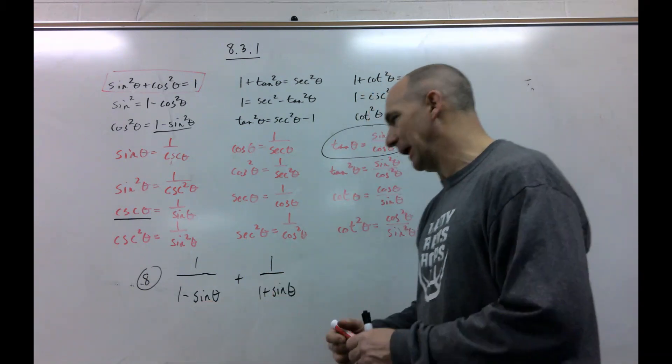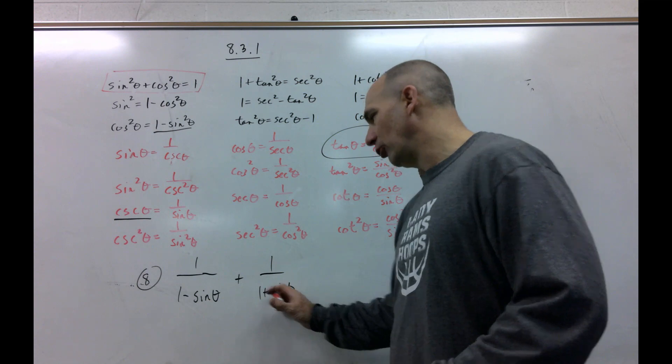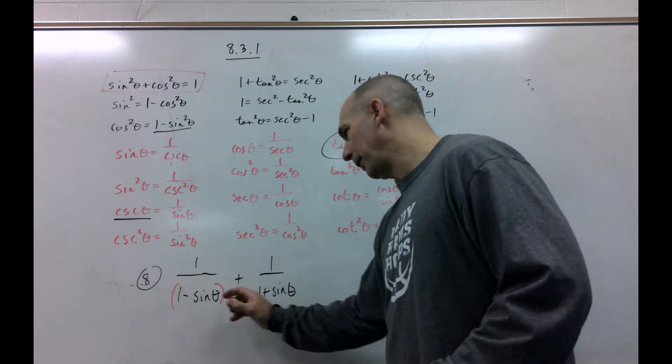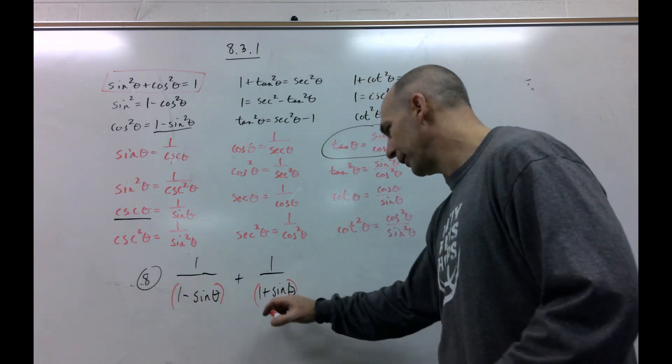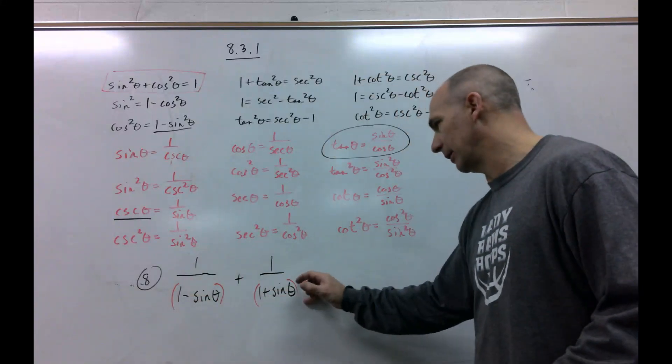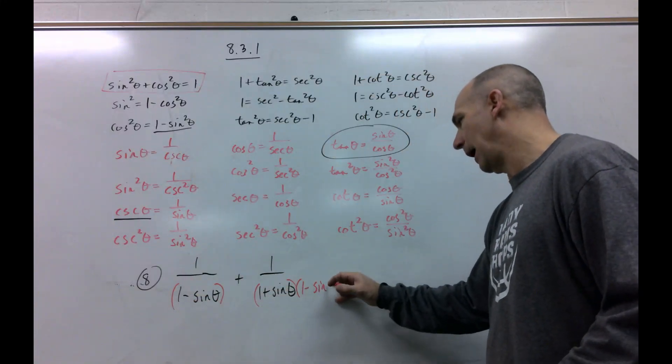These are two fractions being added together. There's my two, there's my three. So I need to multiply this times this, and this times this, to get my common denominators.